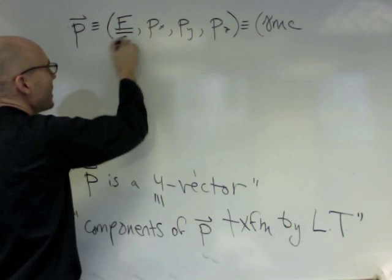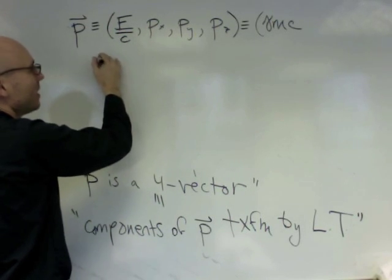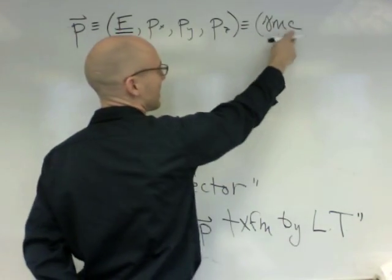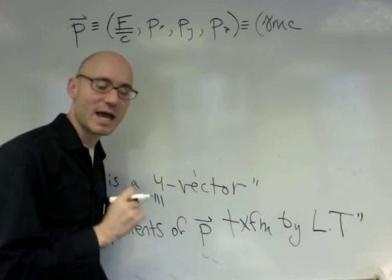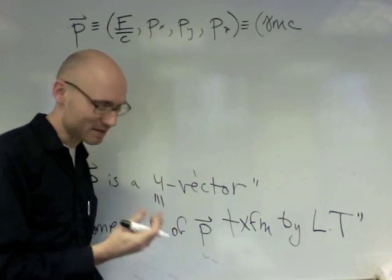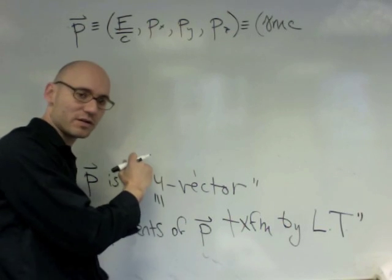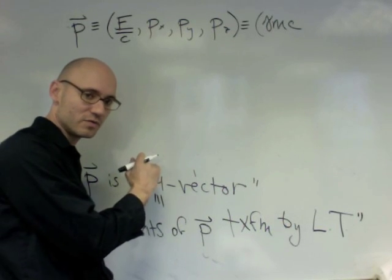So it should be this. And I said that gamma M C. I said that gamma M C was the energy. But, of course, it's not the energy. Gamma M C squared is the energy, because it's M C squared. So I had an error on the board a few seconds ago.